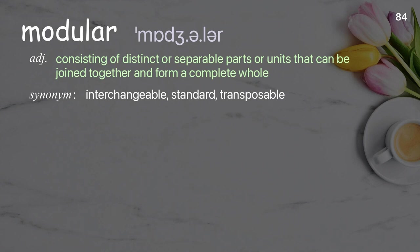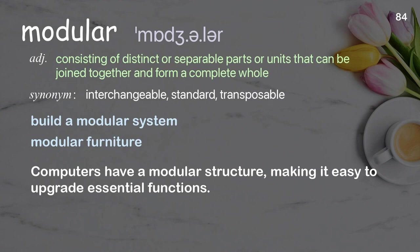Modular: consisting of distinct or separable parts or units that can be joined together to form a complete whole. Examples: build a modular system, modular furniture. Computers have a modular structure, making it easy to upgrade essential functions.